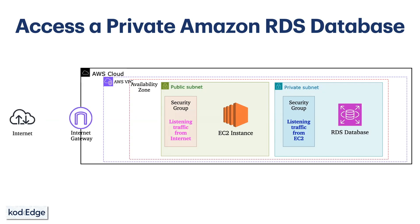At the end, this is how the flow will look like. From the DB client we will send a request to the internet gateway. The internet gateway will forward that request to the EC2 instance, and the EC2 instance will forward that request to the RDS database. So let's move on to the demonstration.